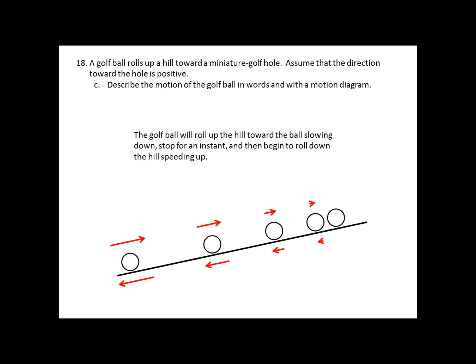So, for part C, describe the motion of the golf ball in words and with the motion diagram, we need to basically say that. The golf ball will roll up the hill towards the hole slowing down. It's going to stop for an instant and then begin to roll down the hill speeding up. My motion diagram, you see the ball in even time increments. The spacing is getting closer and closer as it goes up the hill. It stops just for an instant and then it starts rolling back down.